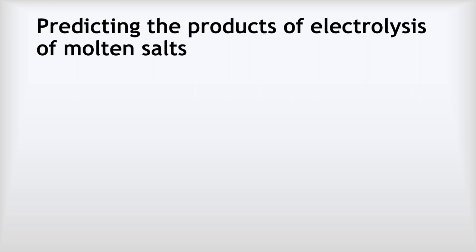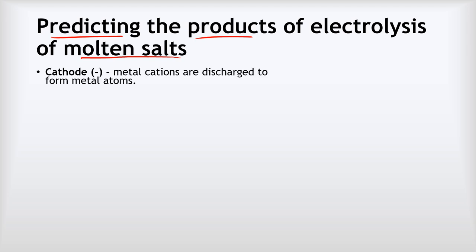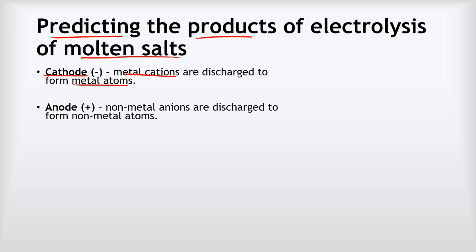Now we need to apply our understanding to predict the products of electrolysis. We'll start with the easier one: predicting the products for molten salts. We've got a really easy rule. At the cathode, metal cations will be discharged to form metal atoms — so at the cathode we will always form a metal. And equally at the anode, which is the positive electrode, non-metal anions are discharged to form non-metal atoms — so at the anode we'll always get the non-metal. You can remember that by putting the N in anode with the N in non-metal.